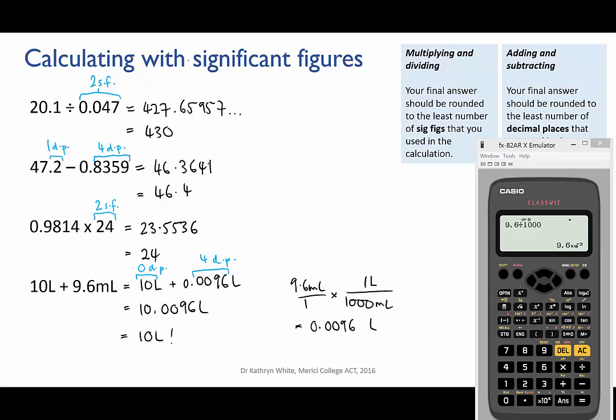If, however, the 10 litres had been measured in a giant volumetric flask or on a balance and it was known to be 10.0000 litres, then the extra 0.0096 litres would be measurable.